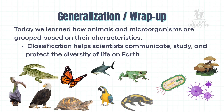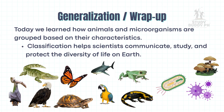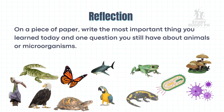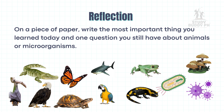Today, we learned how animals and microorganisms are grouped based on their characteristics. Classification helps scientists communicate, study, and protect the diversity of life on Earth. On a piece of paper, write the most important thing you learned today and one question you still have about animals or microorganisms.